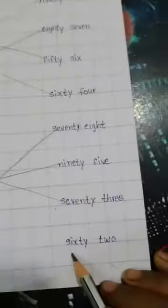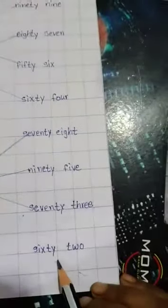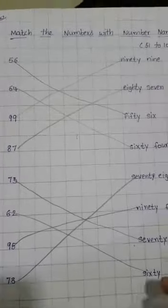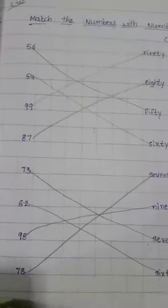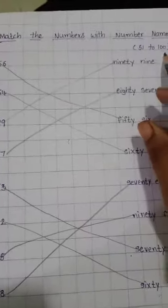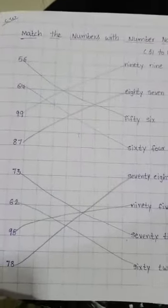Next one, S-I-X-T-Y sixty, T-W-O two, 62. Yaha, okay. You have to complete its CW notebook. And HW mein ap, others numbers 51 to 100 tak ap matching mein likna hai. Okay. Thank you.